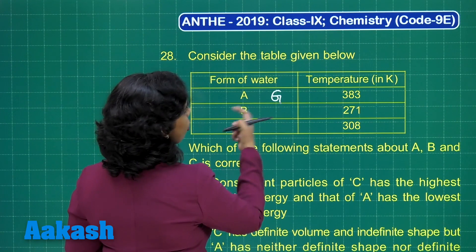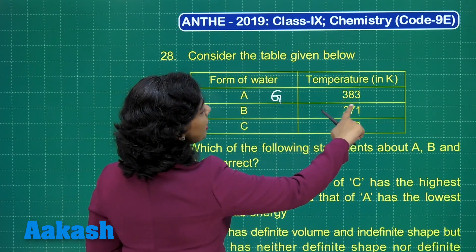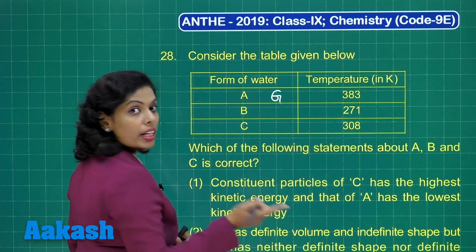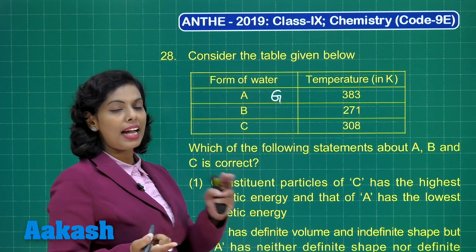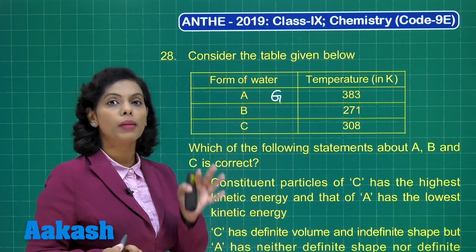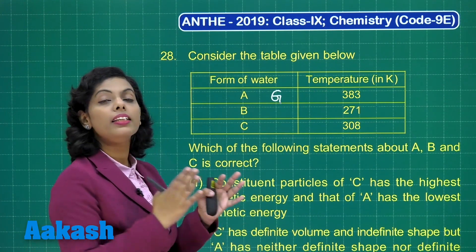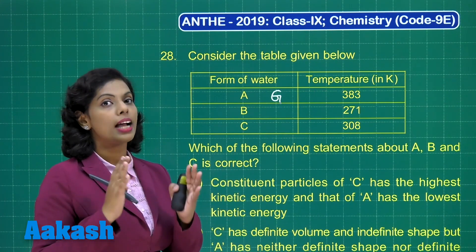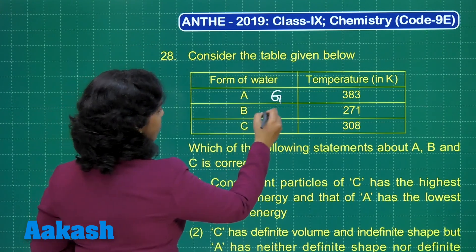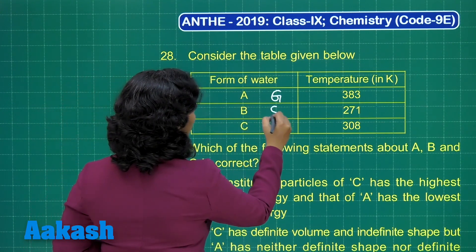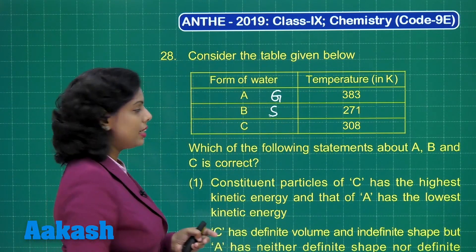Similarly, if I talk about B, that is at 271 Kelvin. If it were 273 Kelvin, ice would melt. But below that, there is solid ice, and that's why B is representing the solid state of water, or ice.